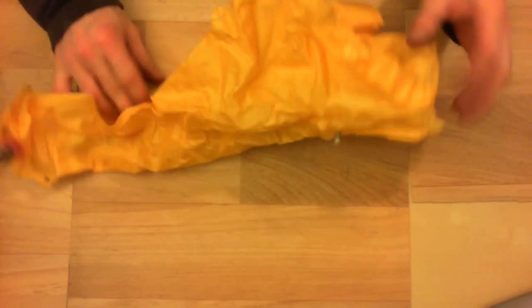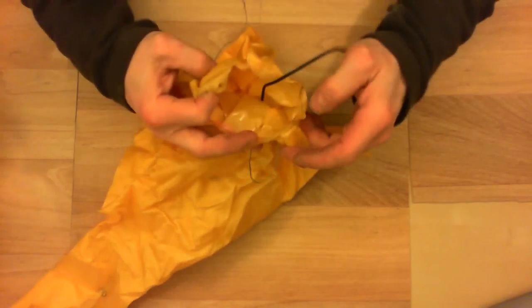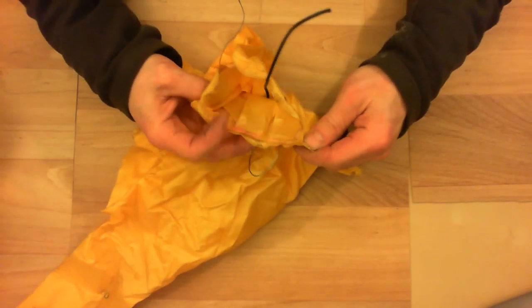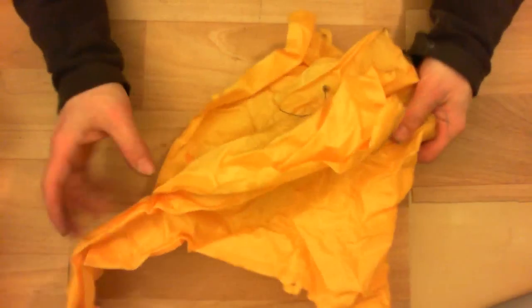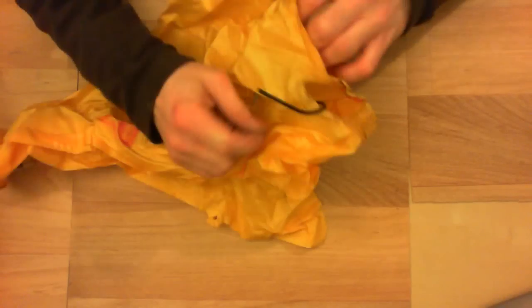So first, this is the flotation balloon, which is inflated with compressed air whenever the sonobuoy touches the sea. It's some plastic sheet.